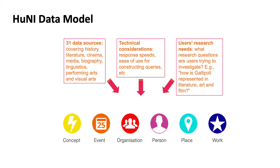The HUNI data model contains six core entity types: concept, event, organisation, person, place, and work.